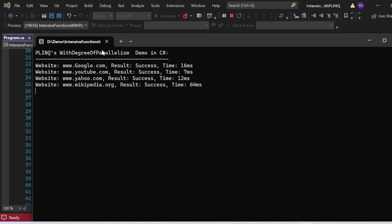PLINQ's WithDegreeOfParallelism demo in C# got printed. Website www.google.com result success time 16 milliseconds, website www.youtube.com result success time 7 milliseconds, website yahoo.com result success 12 milliseconds, website wikipedia.org result success time 16 milliseconds. This output got printed with the help of WithDegreeOfParallelism.